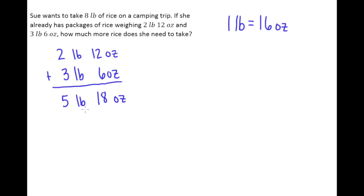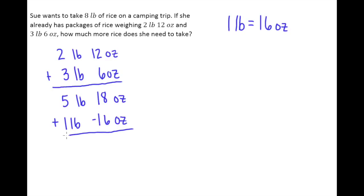Just like when we've done examples with feet and inches — if I ended up with more than 12 inches I wanted to convert those into feet — the same goes here. I have 18 ounces, which is more than one pound, so we'll take 16 of those ounces away and add one more pound.